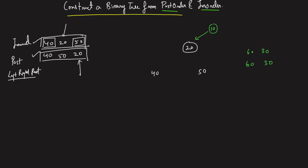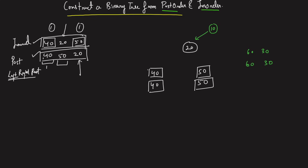I've broken the problem into smaller subproblems again — I have an inorder and postorder for the left (40), and an inorder and postorder for the right (50). I can create each subtree and attach it to the left and right of 20 respectively.